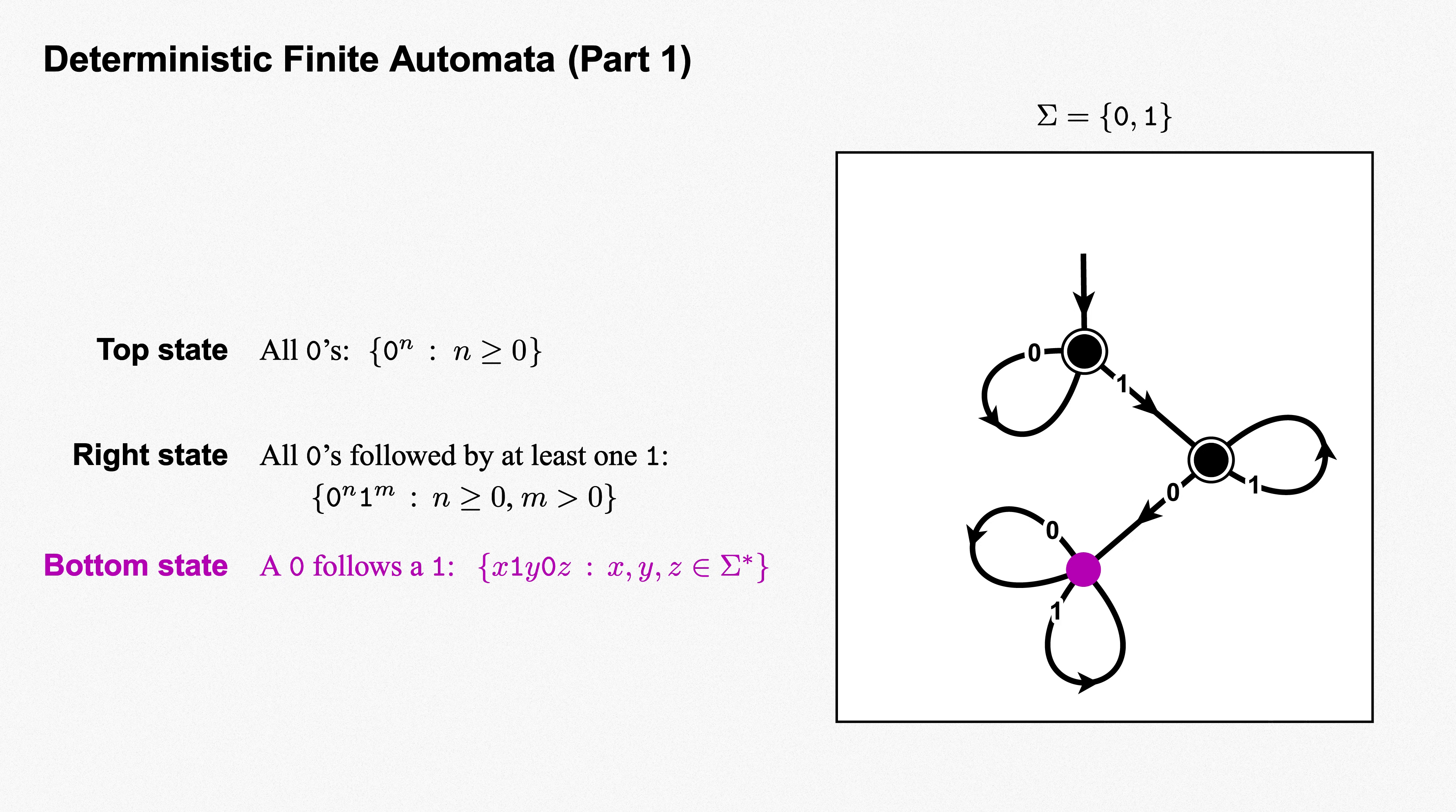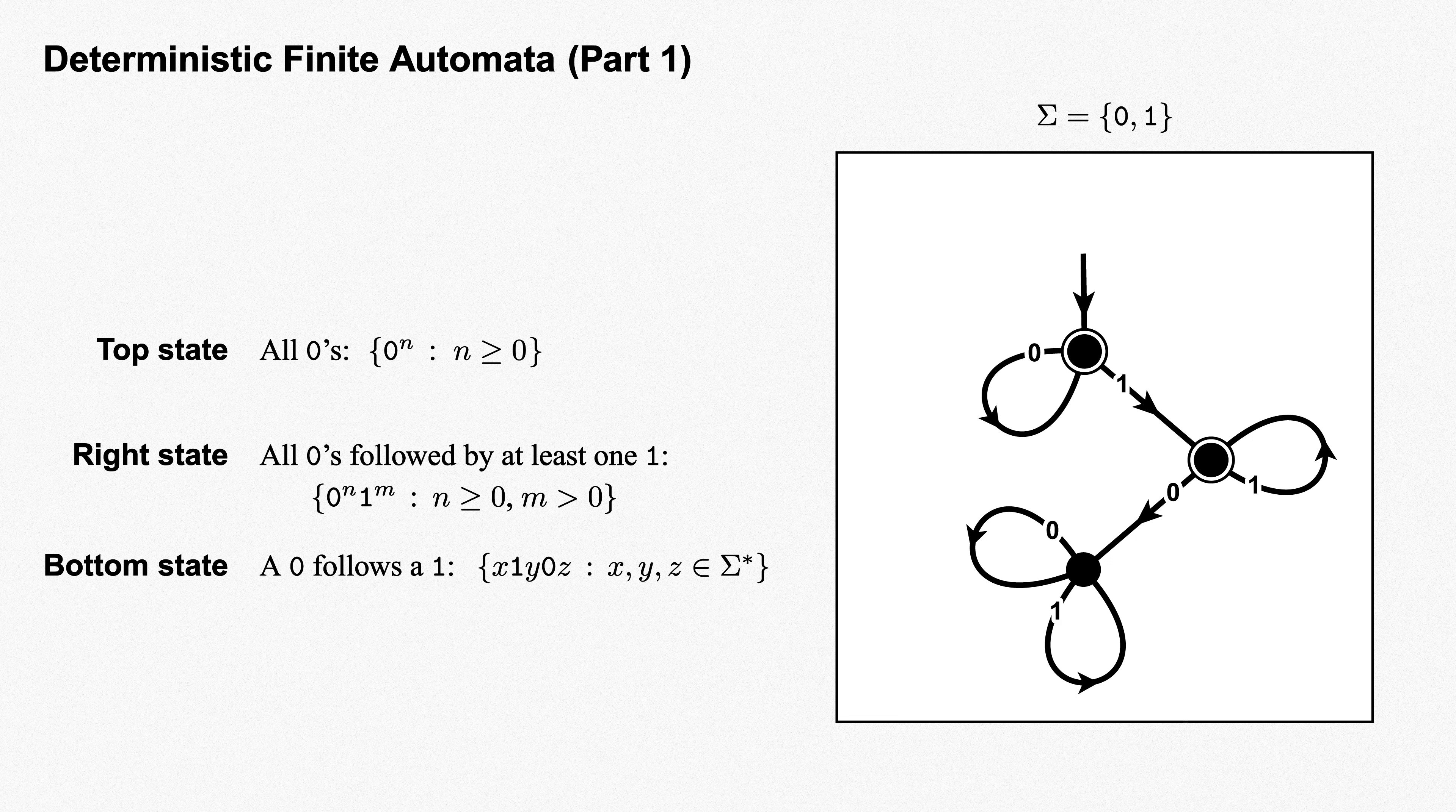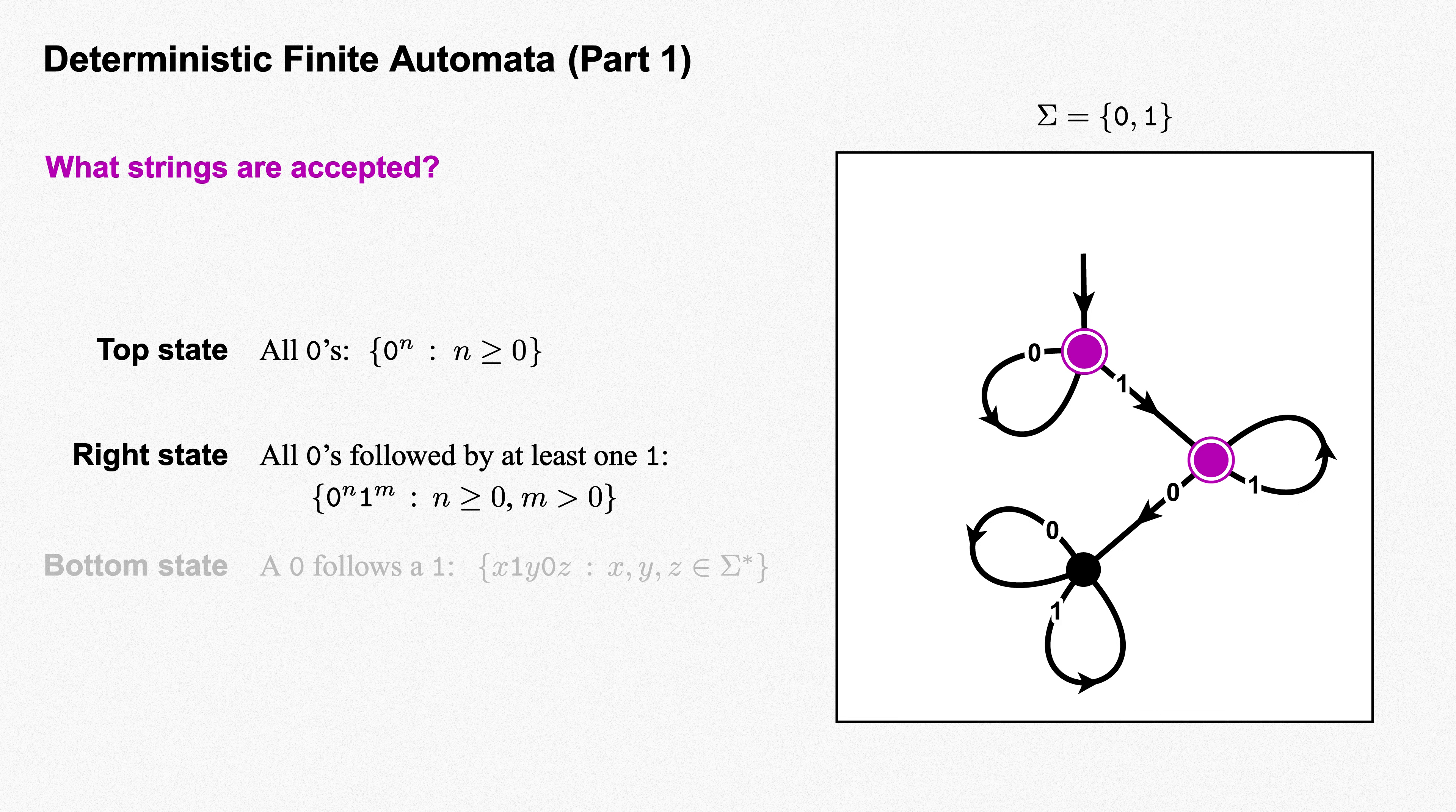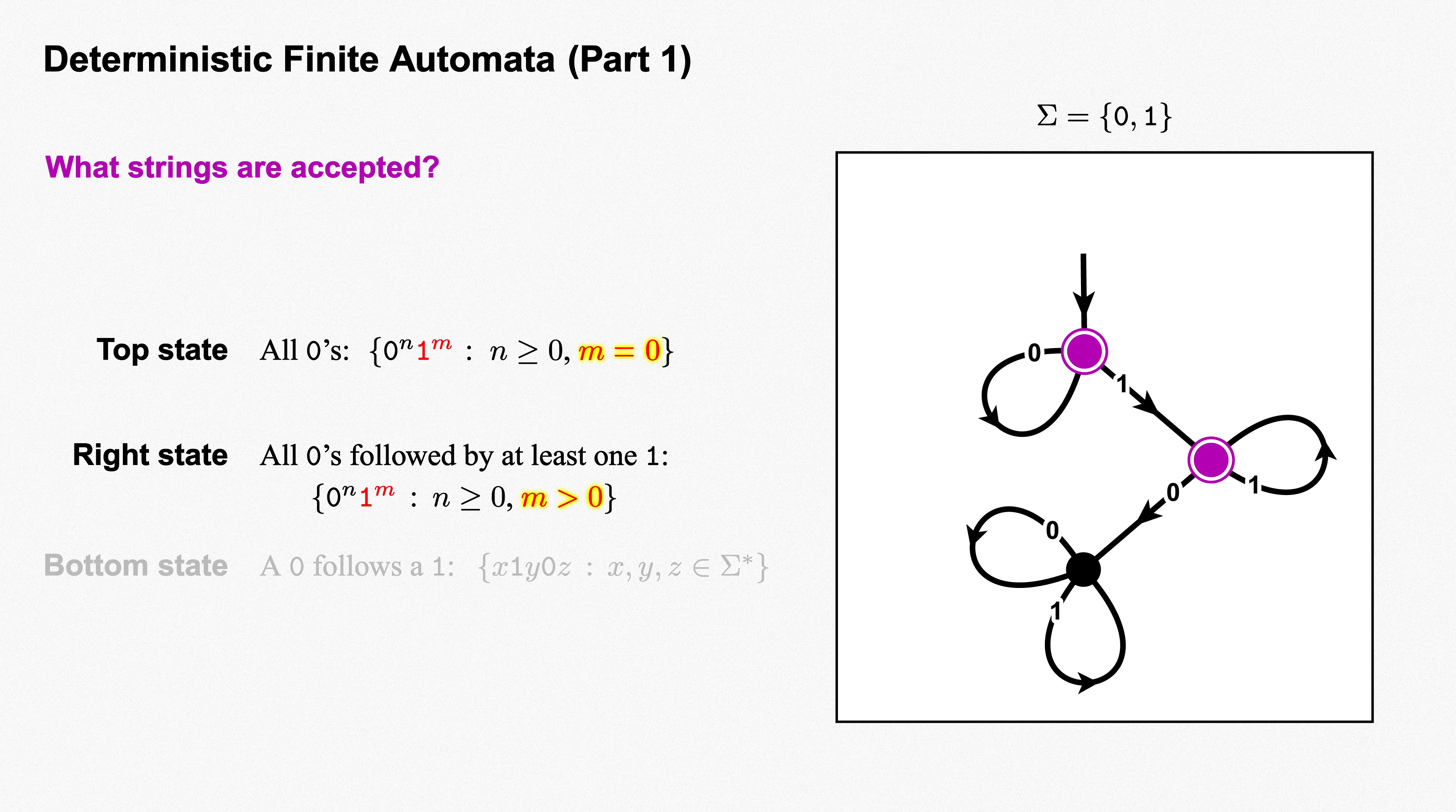Now that we have a sense of what each state means, let's look at the accept states, the start state and the one at the right. The state at the right is where we land for any string of the form 0^n 1^m, for n greater than or equal to 0 and m strictly greater than 0. And the start state is where we land for any string of the form 0^n, for n greater than or equal to 0. This would be exactly the case m equals 0 for the node at the right. Thus we could combine these two descriptions, merging m greater than 0 and m equals 0 into m greater than or equal to 0.